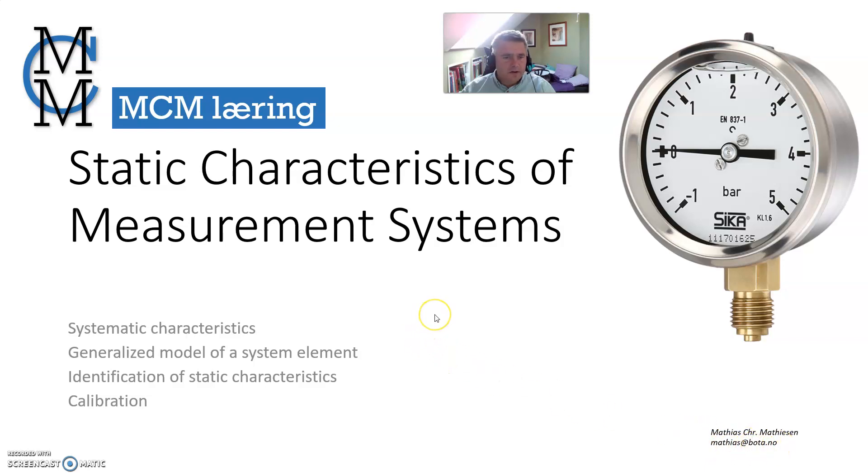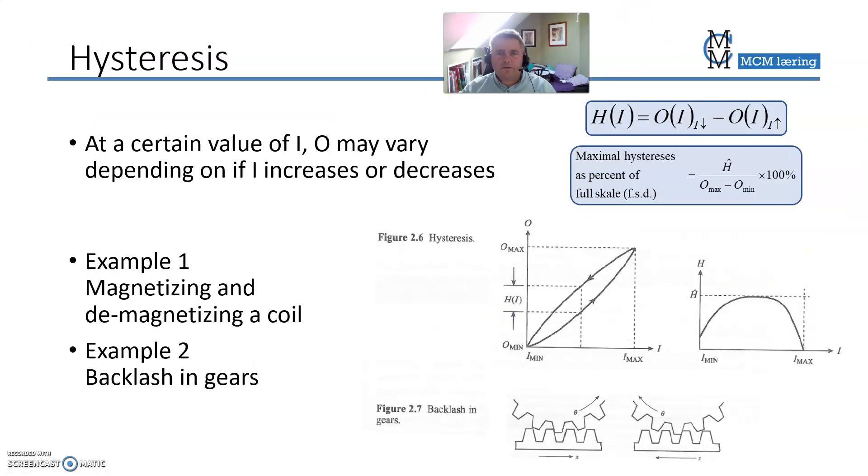Contact at matthias at bota.no and I will try to answer. One effect that is not ideal is so-called hysteresis. That is when measurement systems behave differently when you are on the way up with the input compared to when you go down again. So you may follow different curves depending on if your input is increasing or decreasing.